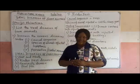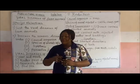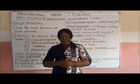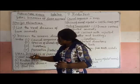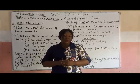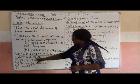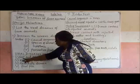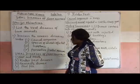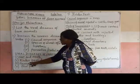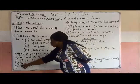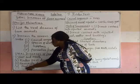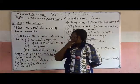In our previous class, we have defined disease and mentioned the viral diseases of farm animals. The viral diseases of farm animals are: number one, Foot and Mouth disease; two, Rinderpest disease; three, Newcastle disease; and finally, Fowlpox disease.